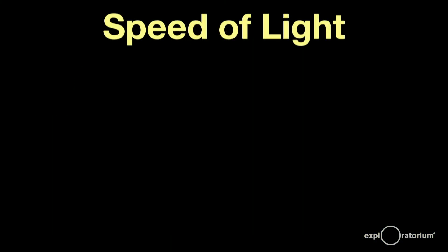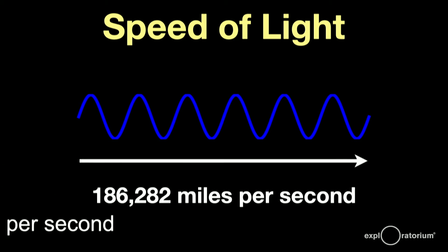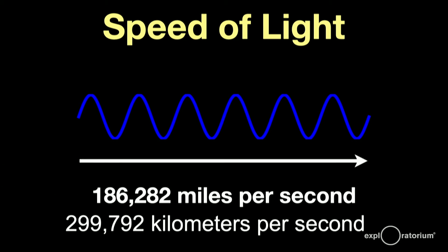Light is an electromagnetic wave, a wave of changing electric and magnetic fields that moves through space at nature's speed limit, 186,282 miles per second, or about 300,000 kilometers per second. Nothing moves faster.